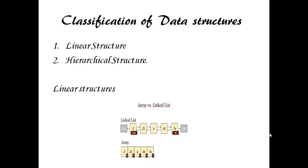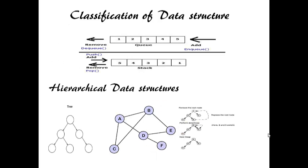Arrays, linked lists, stacks, queues are linear structures, while trees, graphs, heaps, etc. are hierarchical structures.